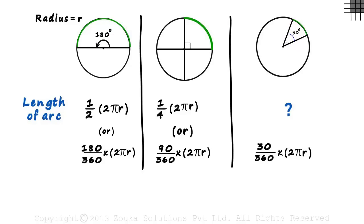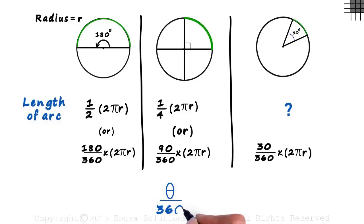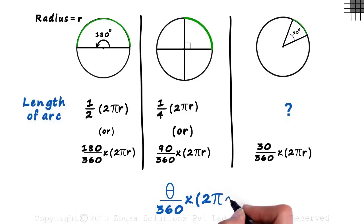So if we have to generalize it, we can say that if the angle subtended by the arc at the center is theta, then the length of the arc is theta divided by 360, multiplied by 2πr.